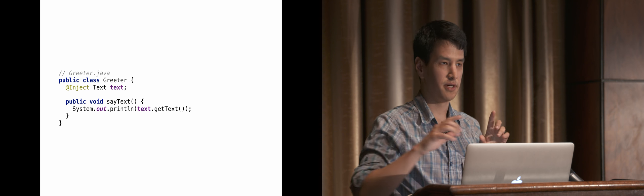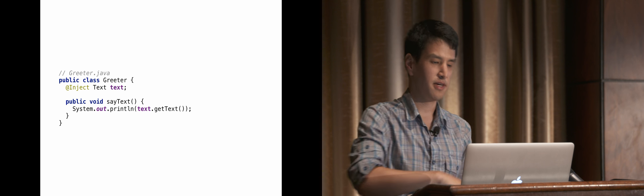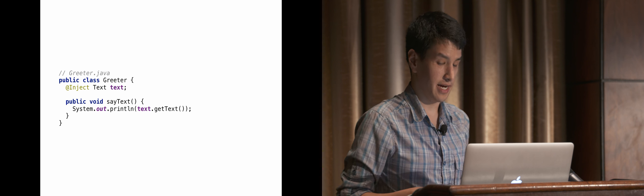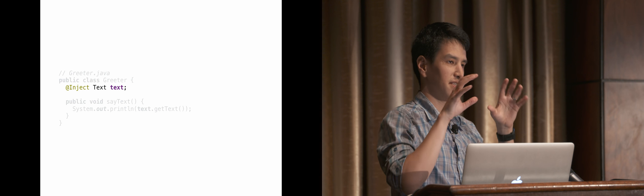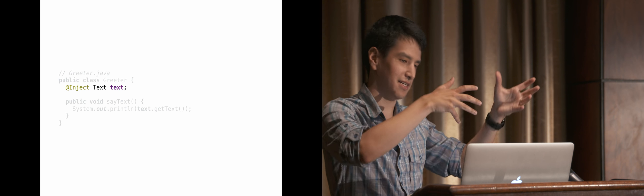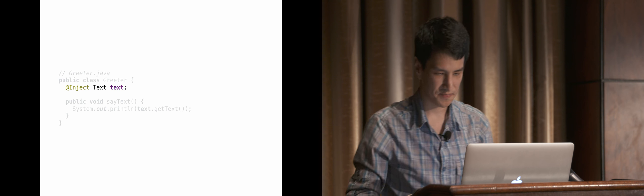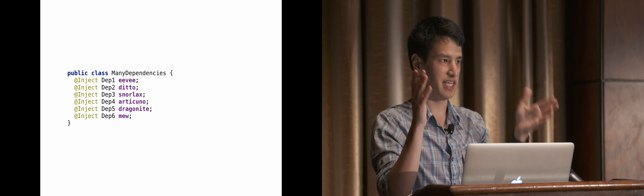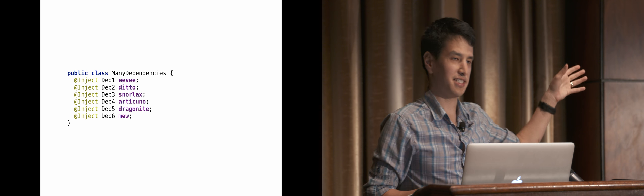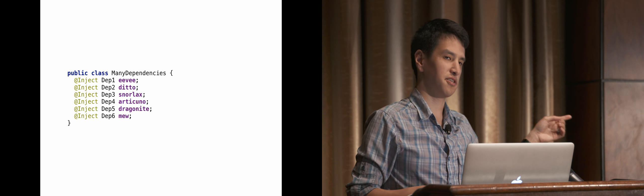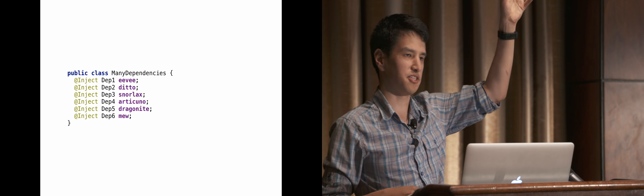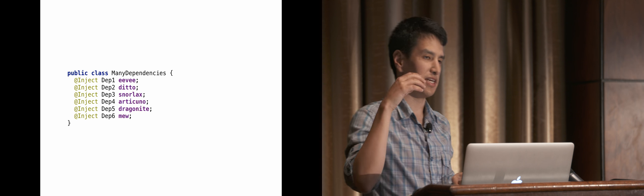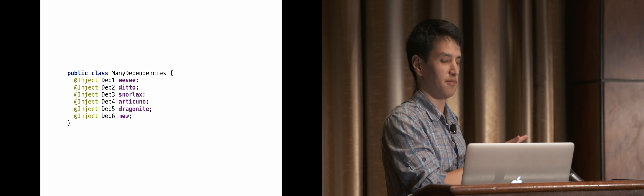An alternative is to annotate the member field directly instead of injecting into the constructor. When you get an instance, it'll find the field and fill in the dependency. You can have @Inject on as many fields as you want. These are two ways of doing the same thing. Field injection is useful if your constructor takes some configuration on top of dependencies - you take those variables in and inject the dependencies separately later.